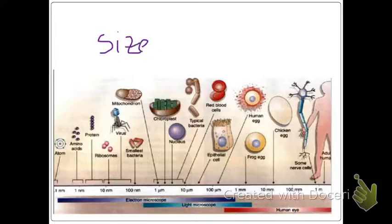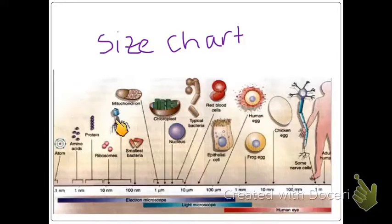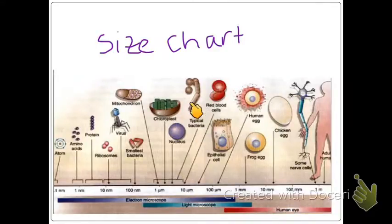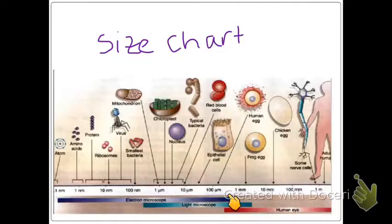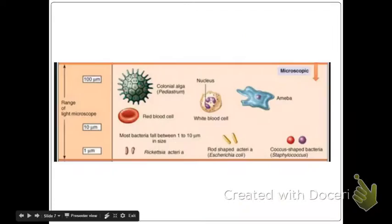This shows the size differences. We have an atom, an amino acid, a protein, a ribosome, a virus — all smaller than our smallest bacteria. Chloroplasts, nucleus, and typical bacteria are a little bigger and can be seen under a light microscope. Smaller things require an electron microscope. Light microscopes stop at about a frog egg or a human egg.